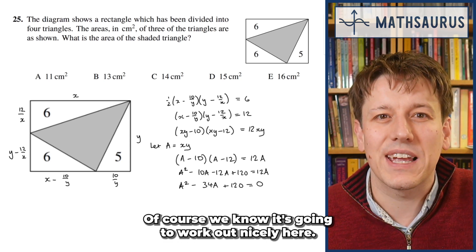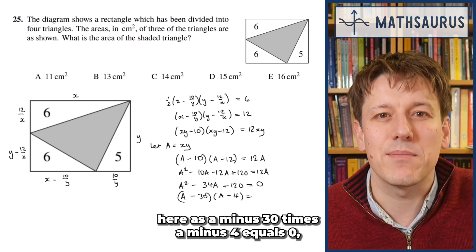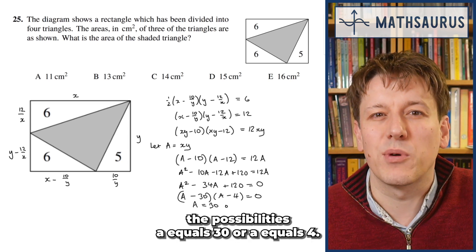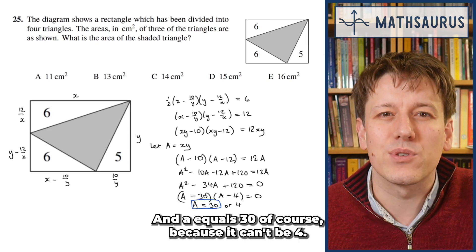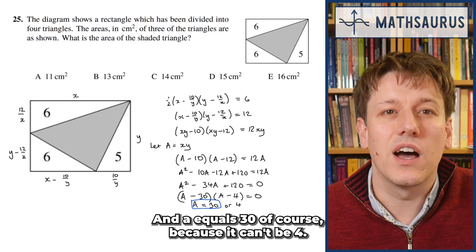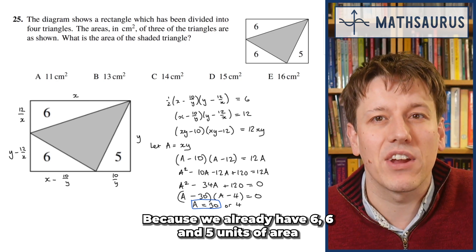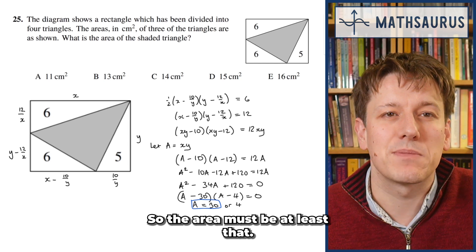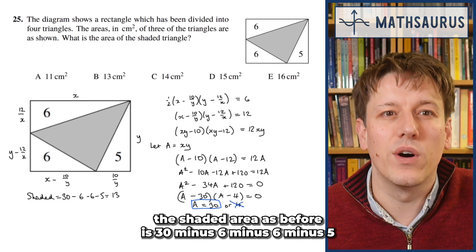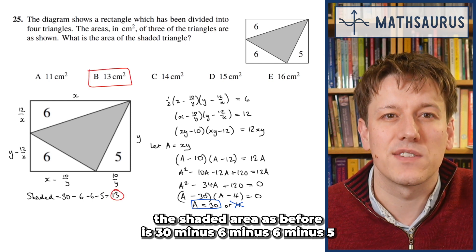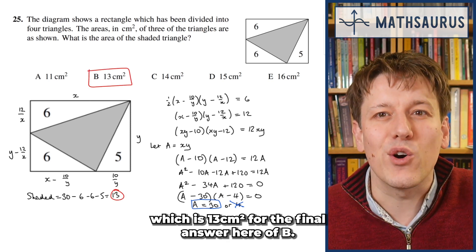We know it's going to factorise nicely, so we get (A minus 30)(A minus 4) equals 0, which gives A equals 30 or A equals 4. A equals 30 is the only thing that makes sense, because A equals 4 can't work — we already have 6, 6, and 5 units of area inside the rectangle, so the total area must be at least that. Therefore the shaded area is 30 minus 6 minus 6 minus 5, which is 13 centimetres squared — answer B.